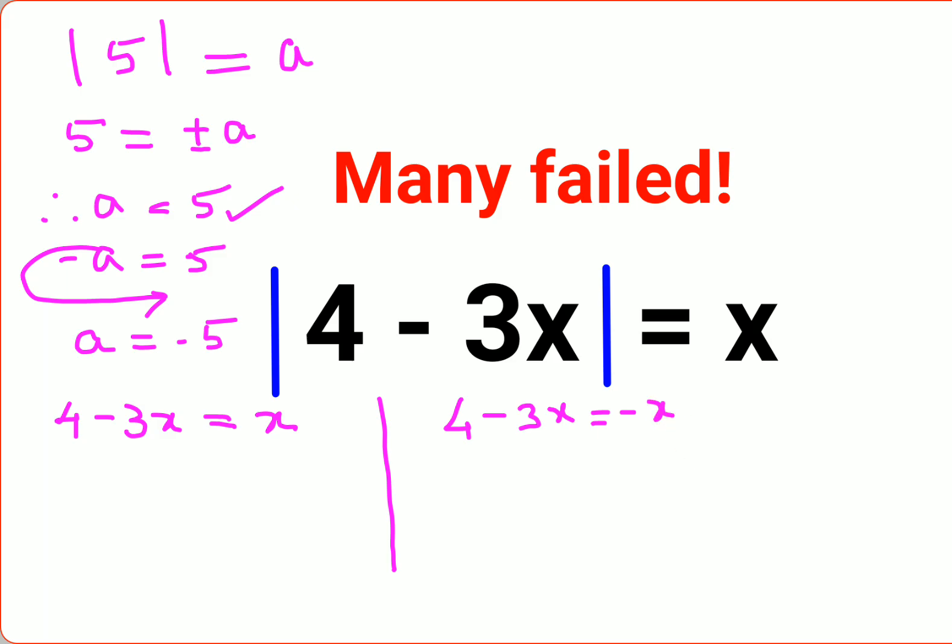Now in order to find the value of x, we need to add both sides by 3x because we want to shift the variables on one side of the equal to. When I do that, this cancels and I'm left with 4 equals 4x. Dividing both sides by 4, we can say therefore the value of x is just 1.